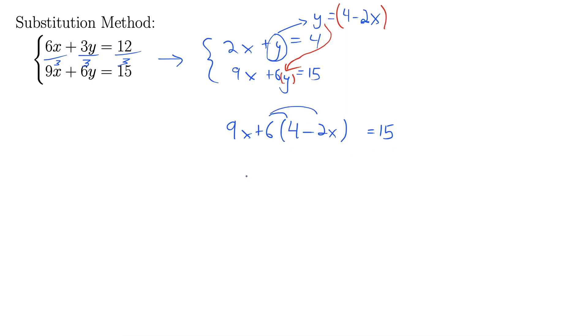This 6 gets distributed through, so we have 9x plus 24 minus 12x equals 15. Let's see, combine like terms, that gives minus 3x, and then I'm going to subtract 24 from both sides.